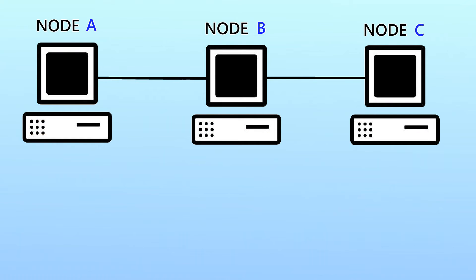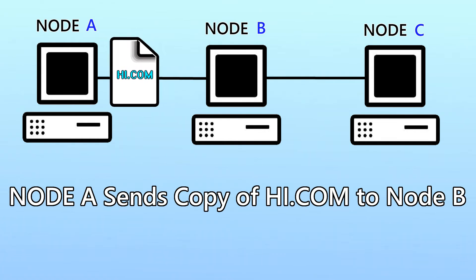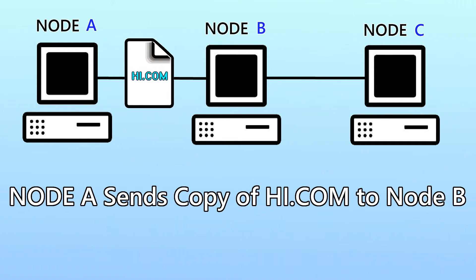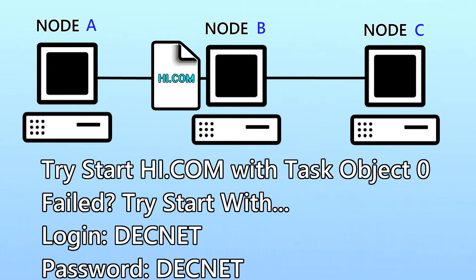The worm was a program called Hi.com, written in the DEC Command Language, or DCL. The scripting language provides access to operating and network level system functions on the local or remote host. The script of around 150 simple lines of code would first copy the Hi.com file to the target machine, then try to start Hi.com on that machine using task object 0, or by logging in with the username-password combination DECnet/DECnet.